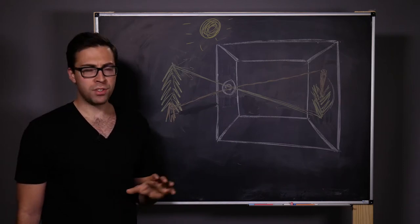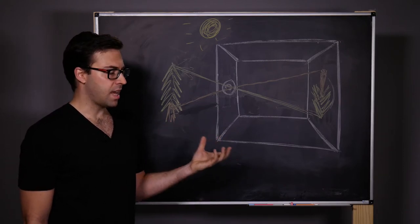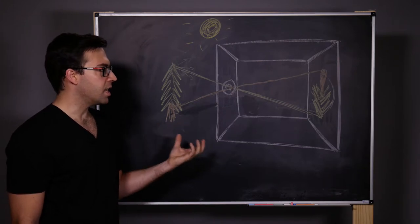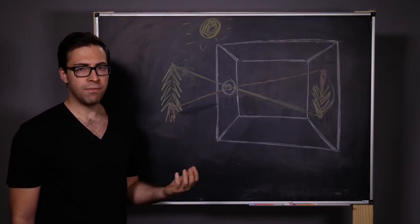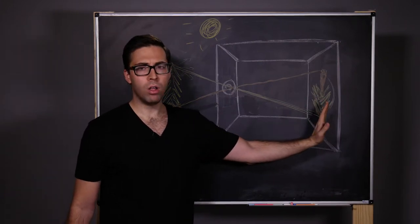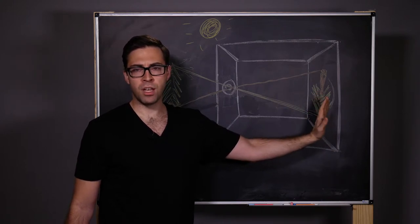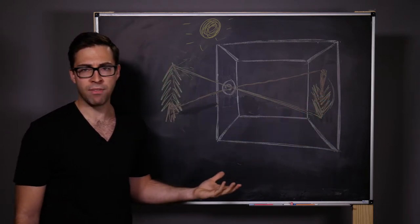And this is why we study the camera obscura, because this is, at its essence, the beginning of photography. All that we have to do is replace this wall with film or a digital sensor. And we basically have a camera.